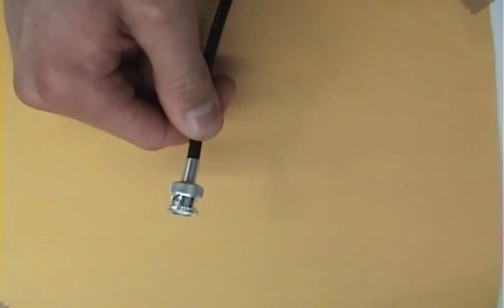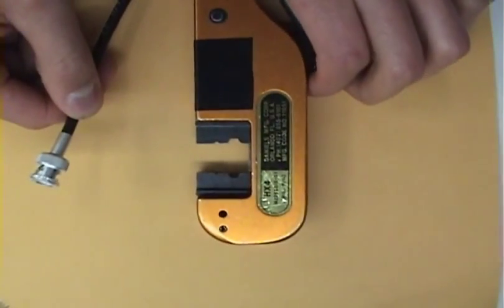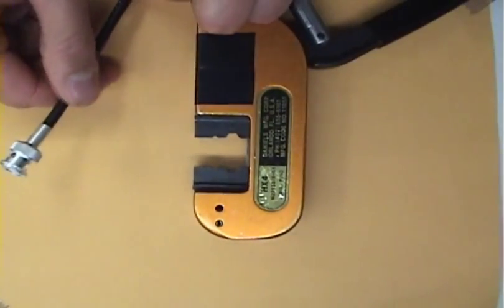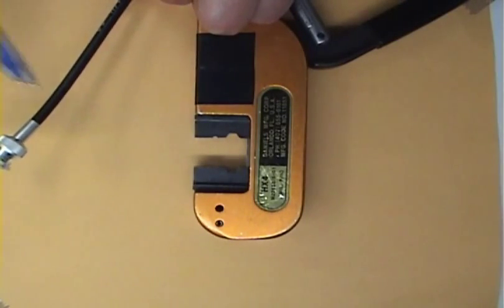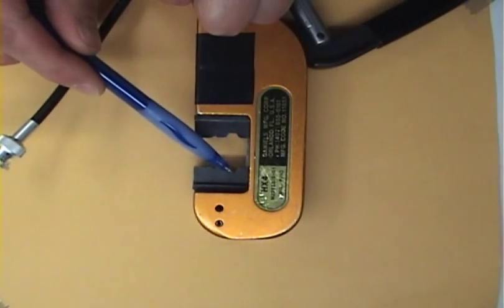Now, it's time to crimp the crimp sleeve, and this time, closure A of the crimping tool will be used.